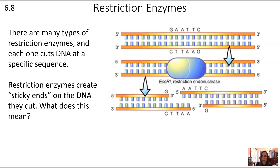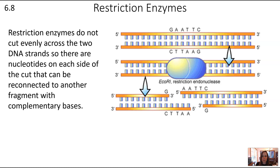What does 'sticky ends' mean? The ends don't line up evenly. EcoR1 cuts between G and A on the five-to-three strand, and also between G and A on the complementary strand — it often looks for palindromic sequences and cuts in a zigzag pattern. This leaves a chunk of DNA, in this case the AATT region, that can then be reconnected to another fragment with complementary bases.